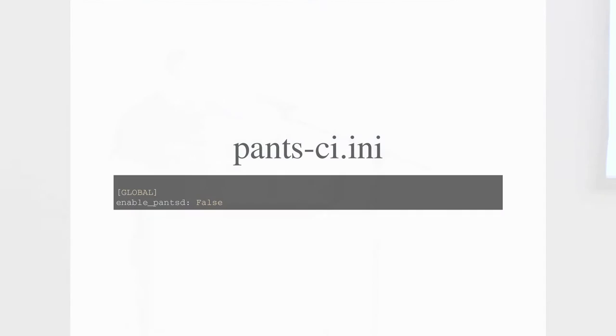An example of what you'd want in pants-ci.ini is maybe you want to turn pants-d off because pants-d is experimental — it's off by default, but in this example I assume you turn it on in pants.ini. So you've configured pants, you're feeling pretty good, and ideally you already wrote some Python code. But you still have to document your DAG — you have to give the dependencies, which is the one thing pants is not going to figure out on its own. An empty pants.ini actually works fine.